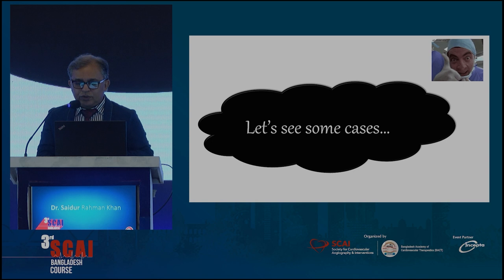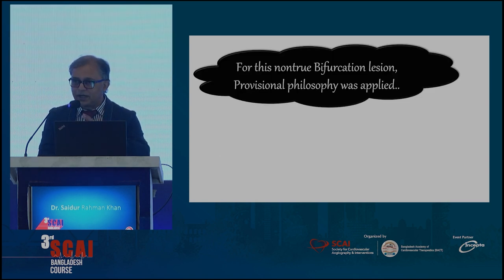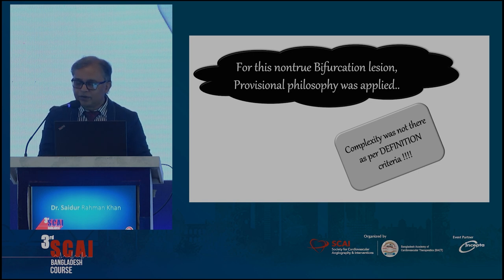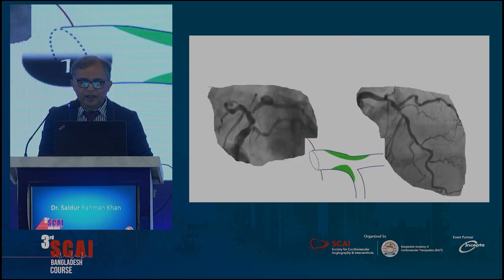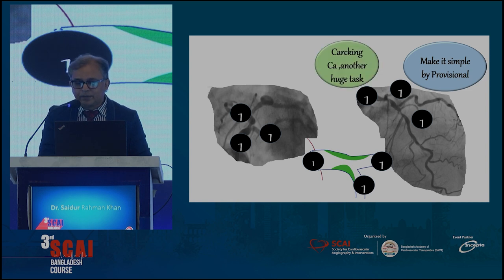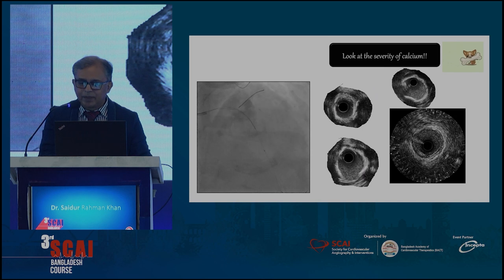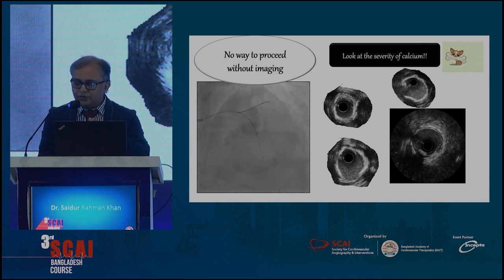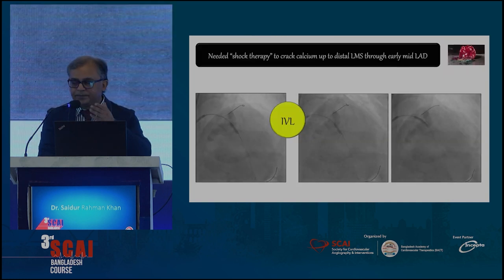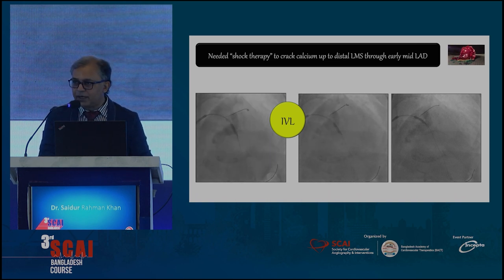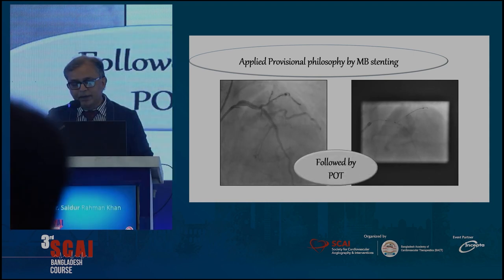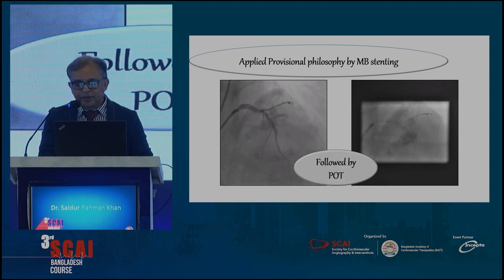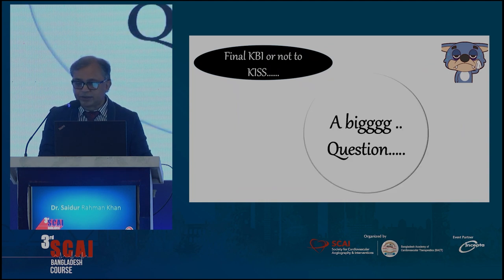From a case-based approach, let's see some cases showing the diversity in left main lesions. For this non-true bifurcation lesion, the provisional philosophy was applied — this is a 1-1-1 bifurcation lesion. You can see the severity of the calcium here. We had to go for shock-wave therapy before proper vessel preparation in the left main and also in the LAD. After that, we proceeded with provisional philosophy stenting — left main to proximal LAD — followed by POT and final KBI.